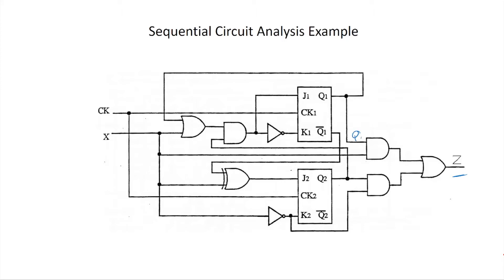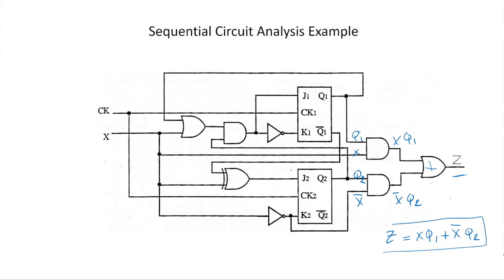In this case, the inputs are Q1, X, Q2, and X-bar. The output of the bottom AND gate becomes X-bar·Q2, and the output of the top AND gate becomes X·Q1. So Z equals X·Q1 OR X-bar·Q2, because there is an OR gate. Since Z depends on both present state Q and external input X, this is a Mealy machine.